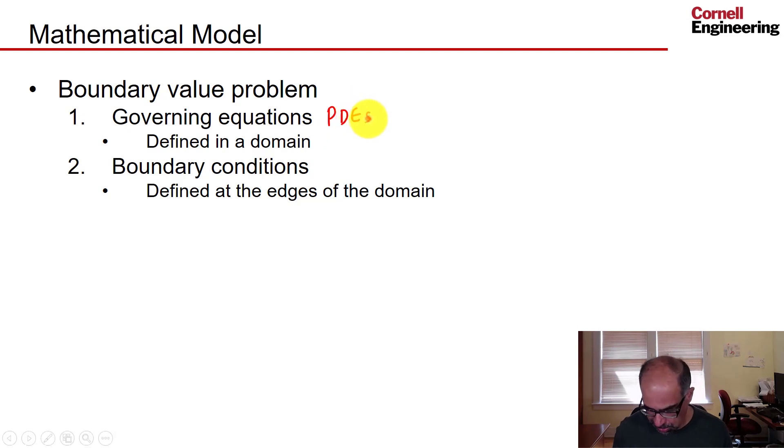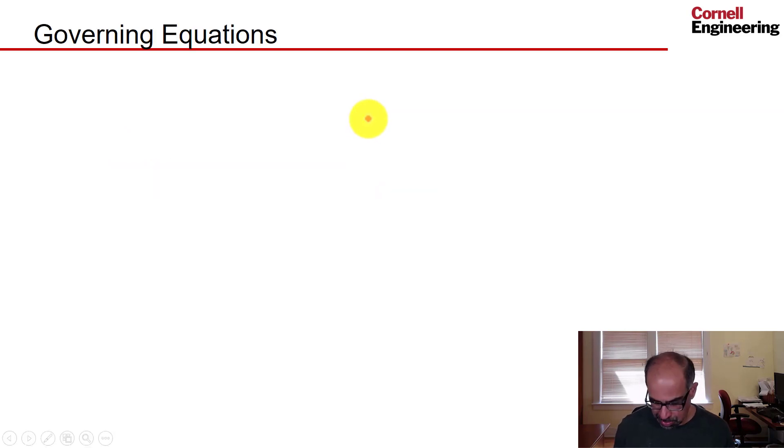Here are the governing equations. We have continuity, which is derived by applying conservation of mass to a vanishingly small chunk of fluid as it moves in the flow, and it looks like du/dx plus dv/dy equals zero.